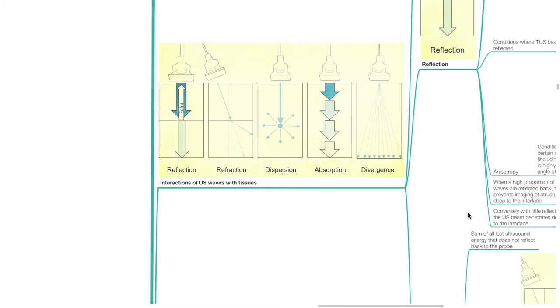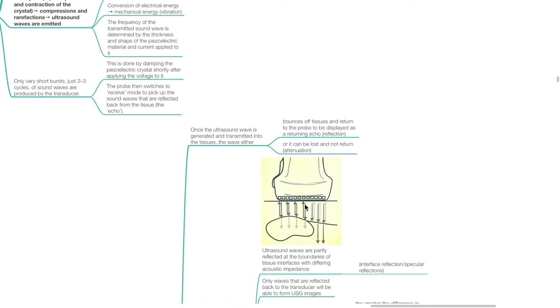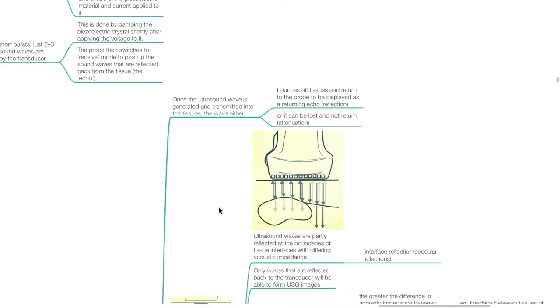Interactions of ultrasound waves with tissues include reflection, refraction, dispersion, absorption, and divergence. Once the ultrasound wave is generated and transmitted into the tissues, the wave either bounces off tissues and returns to the probe to be displayed as a returning echo — a reflection — or it can be lost and not returned due to attenuation.